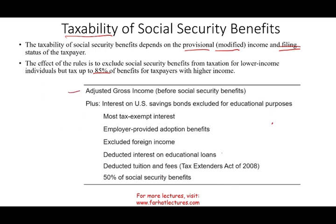We're going to take your adjusted gross income before social security — so we take out social security and compute your adjusted gross income. Then add any interest on U.S. savings bonds that was excluded for educational purposes, add most tax-exempt interest, add employer-provided adoption benefits, add excluded foreign income, add deducted interest on educational loans, add deductions for tuition and fees. Then add 50% of your social security.